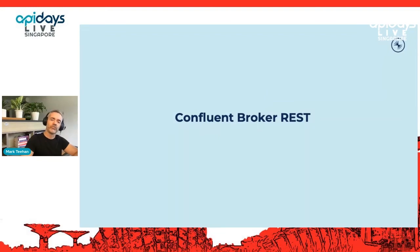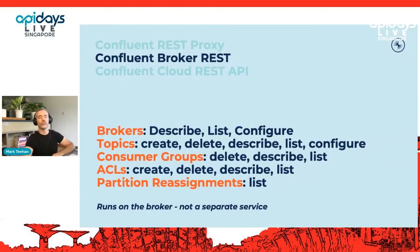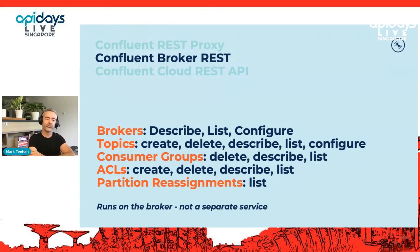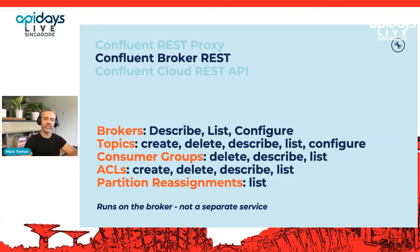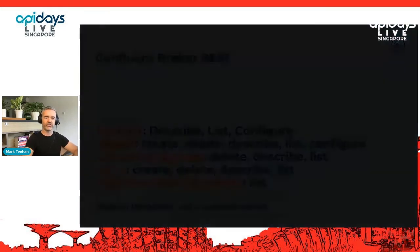The second option is the Confluent Broker REST — a REST port that runs on the broker itself. If you're a Kafka user, you're familiar with port 9092 as the default port for producing and consuming. You can enable additional ports on your brokers, including the broker REST port. Like the REST proxy, it allows a lot of metadata interaction — you can describe, list, and configure your brokers and so on. These are all metadata-related categories for now; data produce and consume is coming soon, and will allow producing and consuming over REST to brokers without any additional VMs or Docker services.